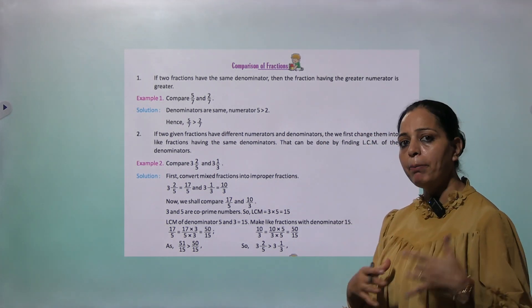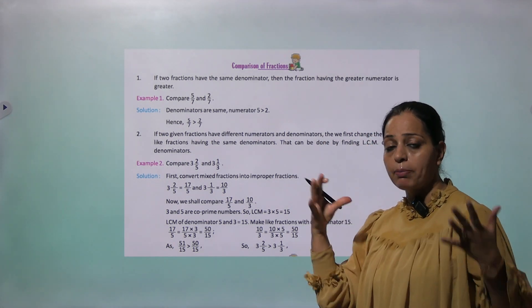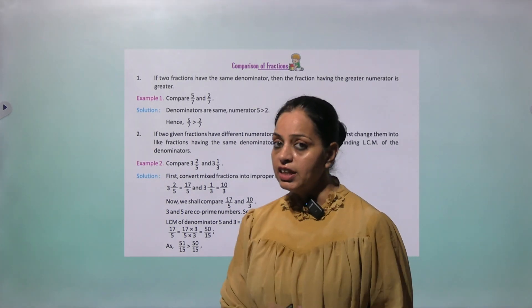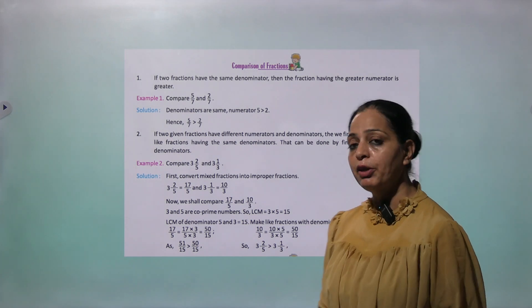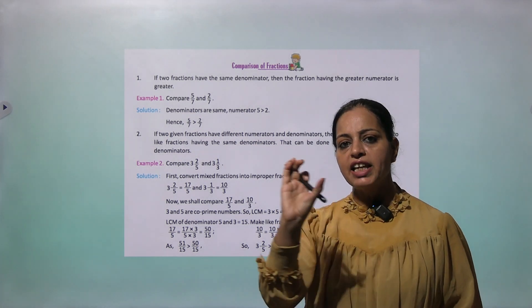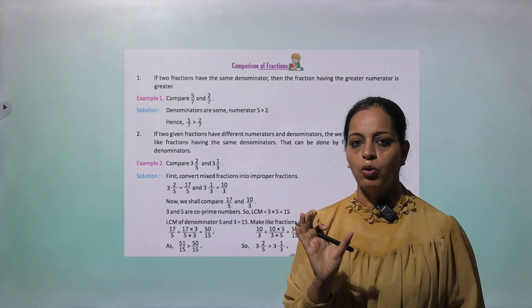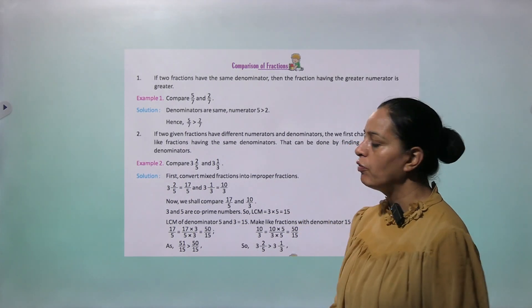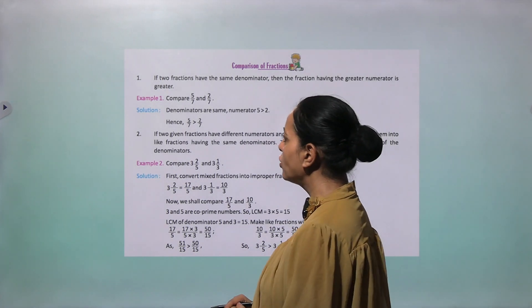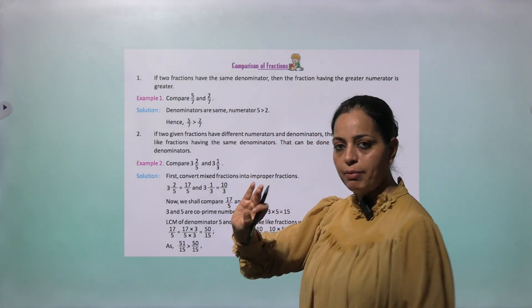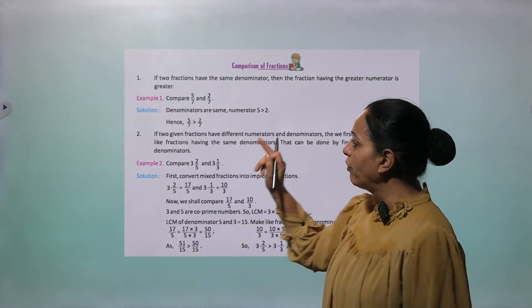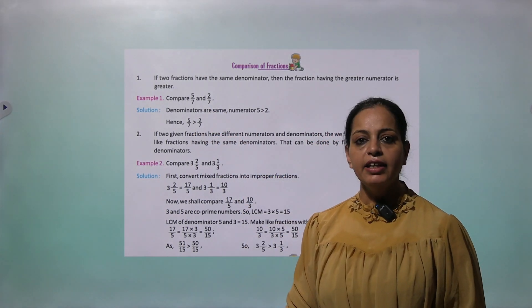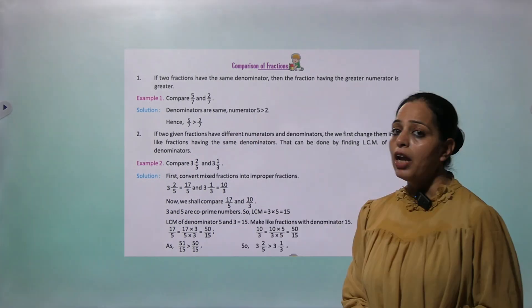Now we come to comparison of fractions. Which fraction is bigger? If two fractions have the same denominator, we compare the numerators — the bigger numerator gives the bigger fraction. Example 1: Compare 5 by 7 and 2 by 7. Both have denominator 7, so compare numerators: 5 and 2. Since 5 is bigger than 2, therefore 5 by 7 is bigger than 2 by 7.